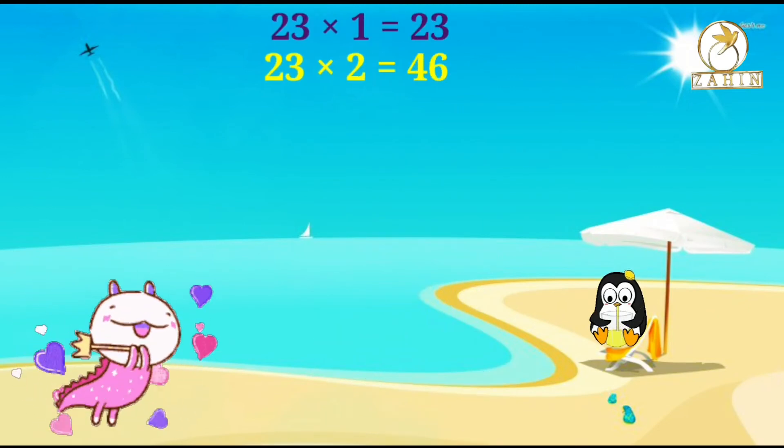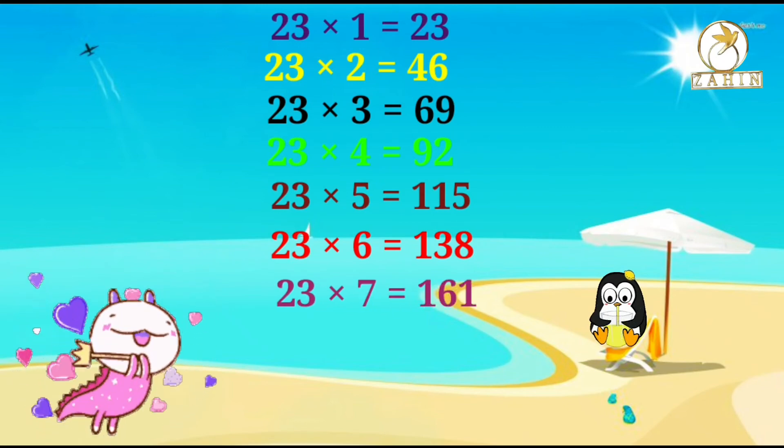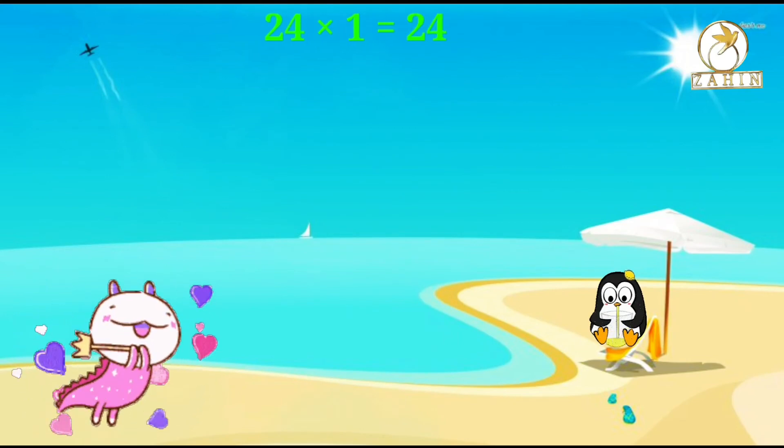23 times 2 equals 46, 23 times 3 equals 69, 23 times 4 equals 92, 23 times 5 equals 115, 23 times 6 equals 138, 23 times 7 equals 161, 23 times 8 equals 184, 23 times 9 equals 207, 23 times 10 equals 230. 24 times 1 equals 24.